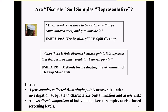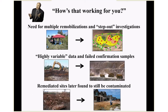This expedited things and allowed direct comparison of individual discrete samples to risk-based screening levels. But the reality: there's a need for multiple remobilizations and step-out investigations when doing discrete samples, which is why site investigations can be drawn out for years. You see highly variable data, failed confirmation samples are very common — you start off with what you think is a small area of contamination and it keeps getting bigger. Or the worst case: remediated sites are later found to still be contaminated, which is happening as we go back and reinvestigate sites we thought we cleaned up in the early 1990s.